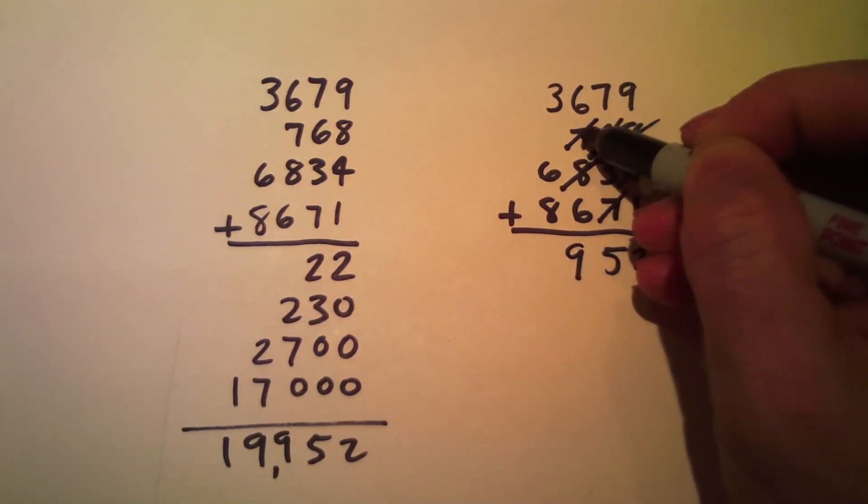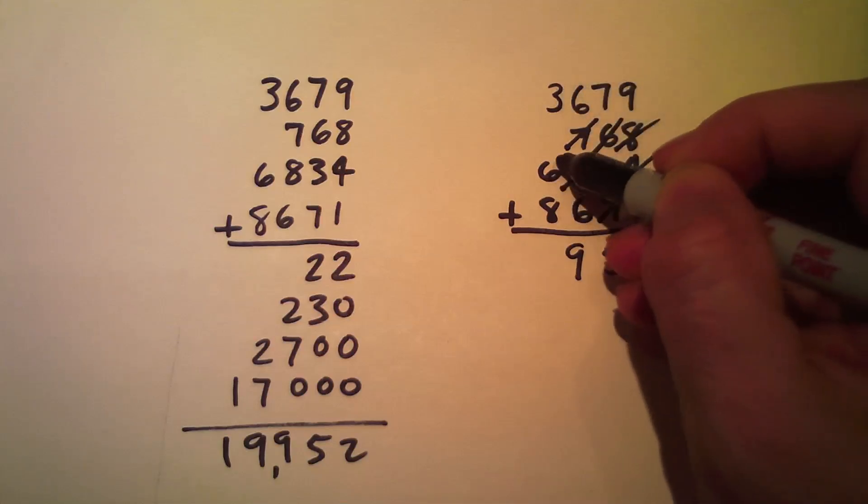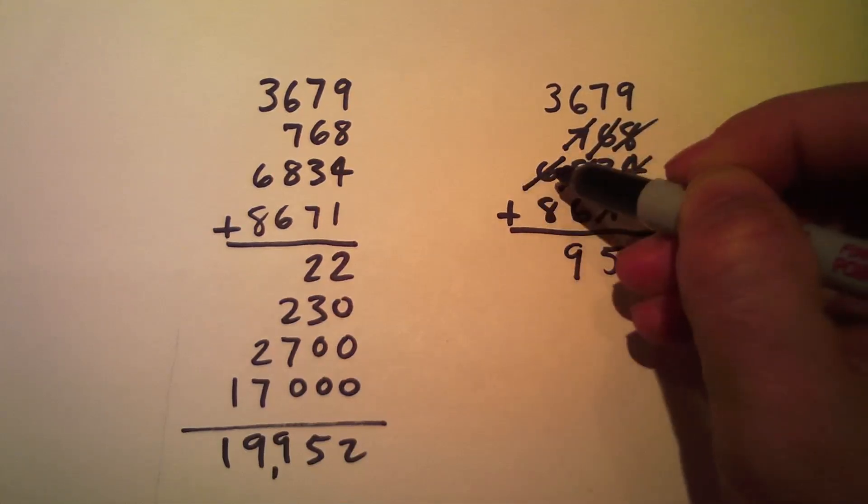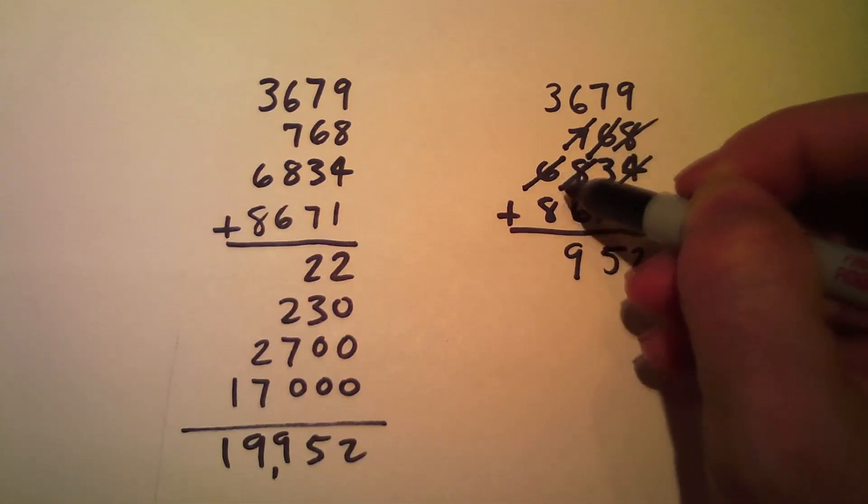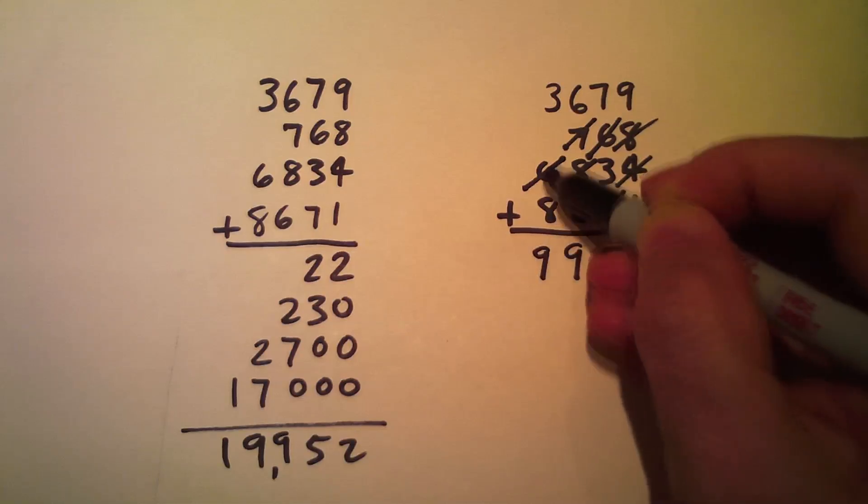2 and 3 is 5, 5 and 6 is 11, only keep track of the 1. The ones place, 1 and 8 is 9, and I've got 1 scratch, so 1.